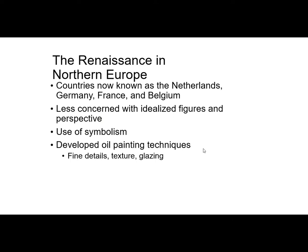The Renaissance does happen in other places — the early Northern Renaissance in the Netherlands, Germany, France, and Belgium. They'll have the use of symbolism and oil painting, which is an important thing to note. Frescoes are used in Italy mostly because of church architecture — done on wet plaster. In Northern art they use oil painting, so they have glazes and can create extremely fine details with tiny brushes.